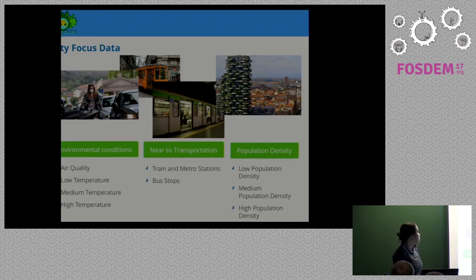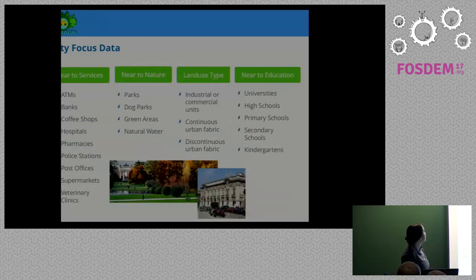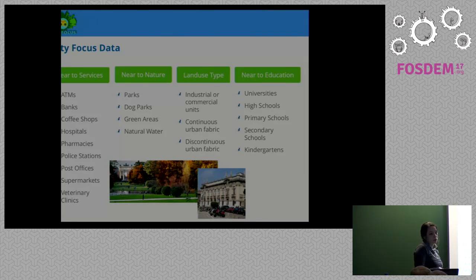The criteria we consider for this demo include environmental conditions such as air quality and temperature within the city, population density for those who prefer suburbs over the city center, and nearness criteria: nearness to transportation like bus stops, train and metro stations; nearness to services such as ATMs, pharmacies, coffee shops, and hospitals; nearness to nature like parks or water streams; land use type; and nearness to education such as schools and universities.